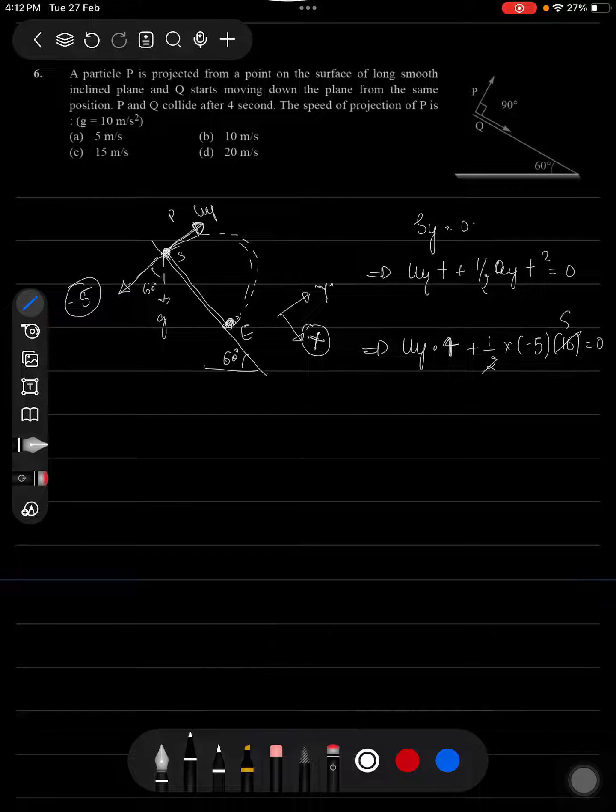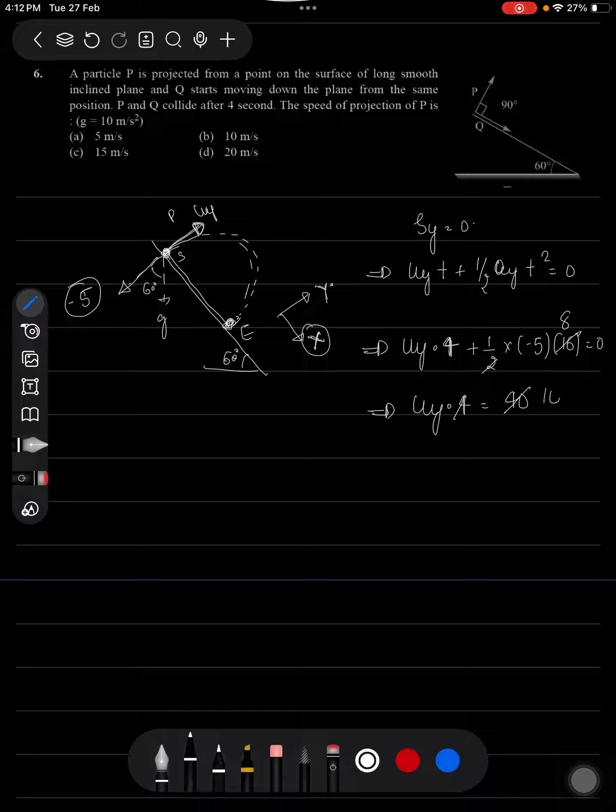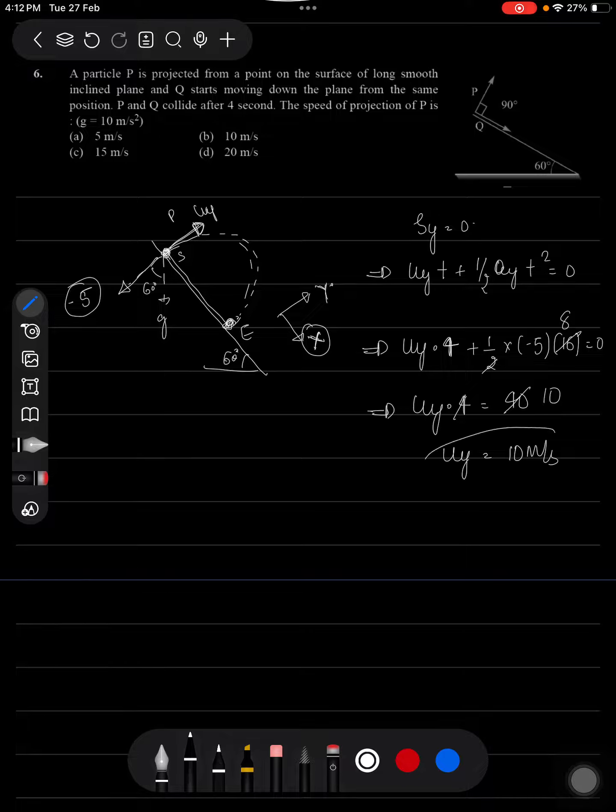So this will be 8 times. So Uy times 4 equals 40. This 4 will cancel out, 10 times. So initial velocity given to particle P is going to be 10 meters per second, which indicates option B will be correct for this question. Thank you.